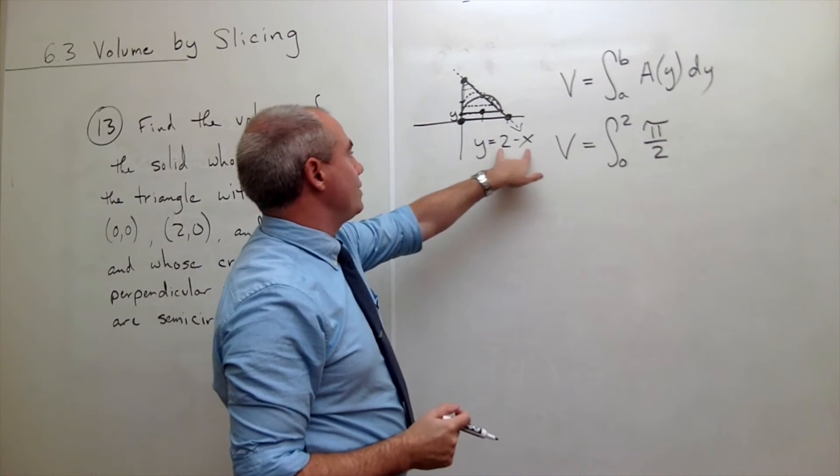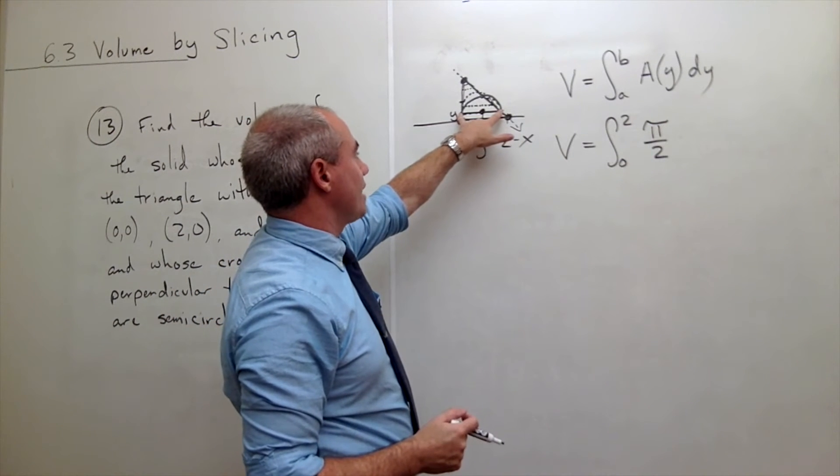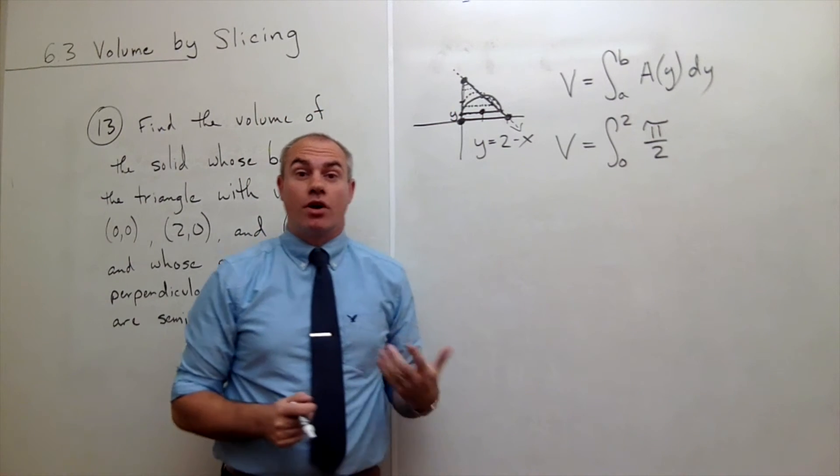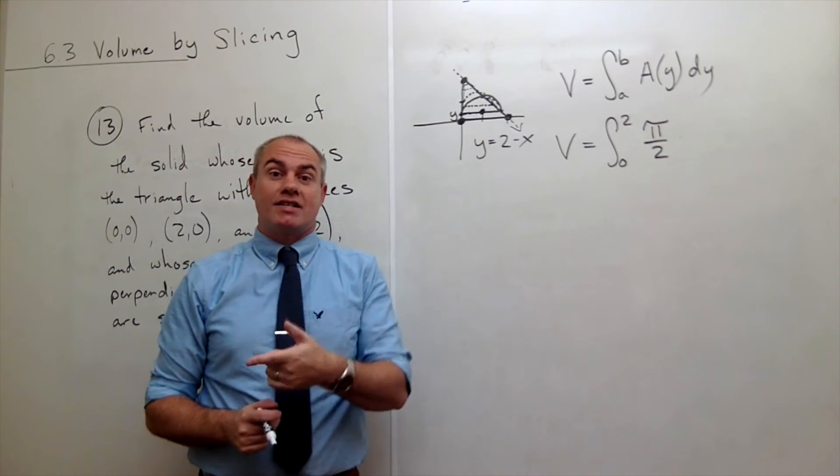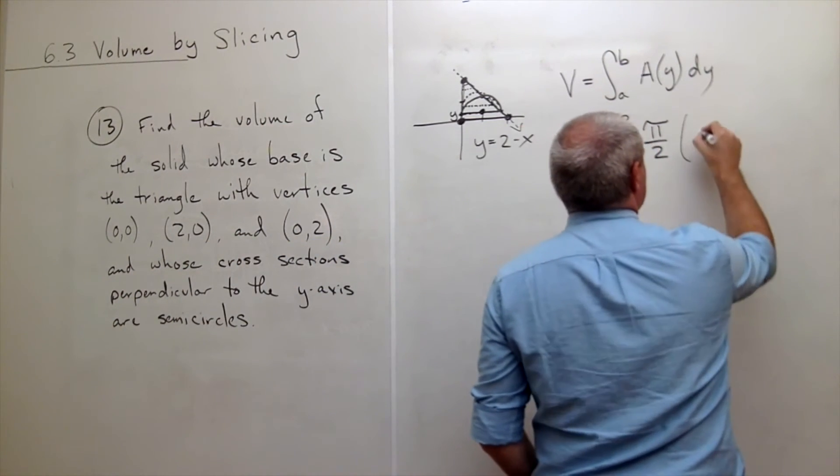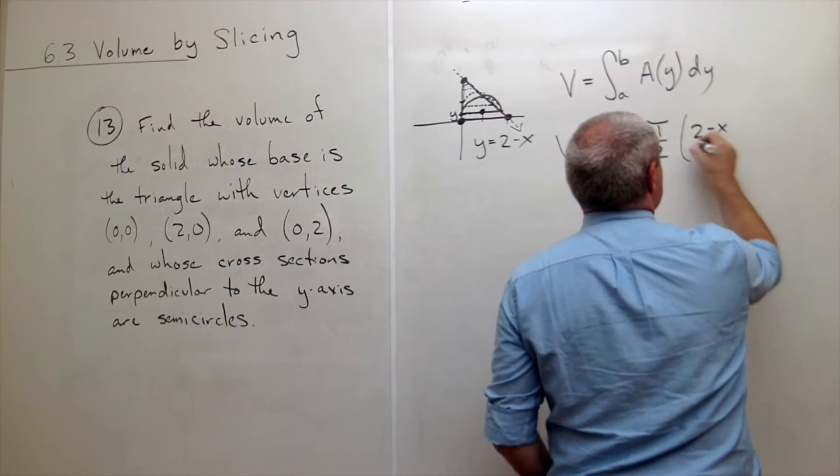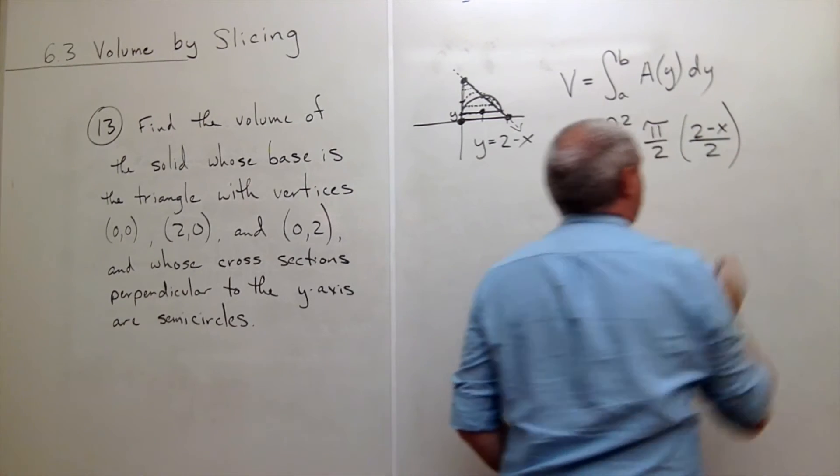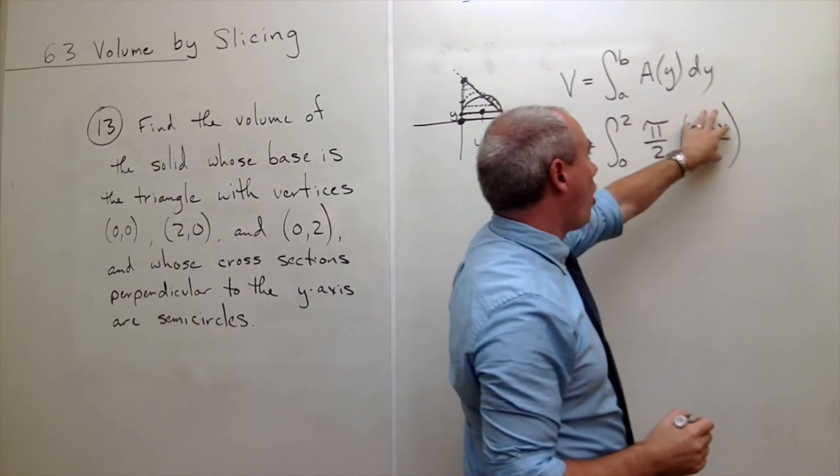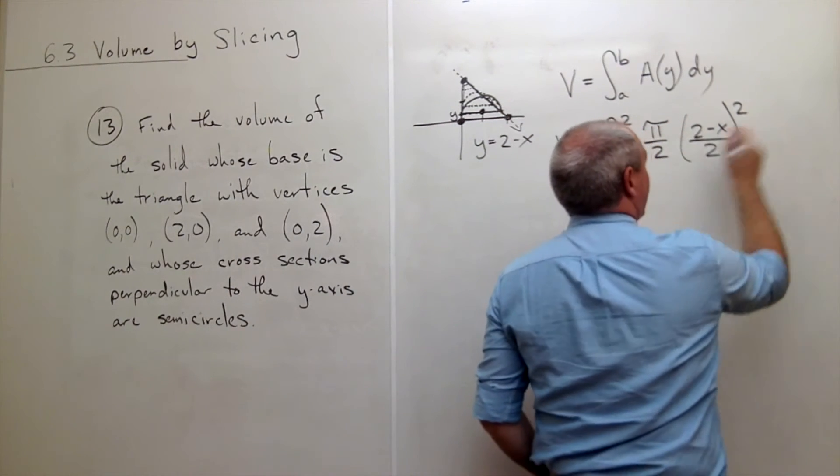And I don't want 2 minus x because that would give me the diameter. I want half of that, which would give me the radius. So my radius is (2 - x)/2. So I want (2 - x)/2, that's the radius, but remember it was πr² over 2.